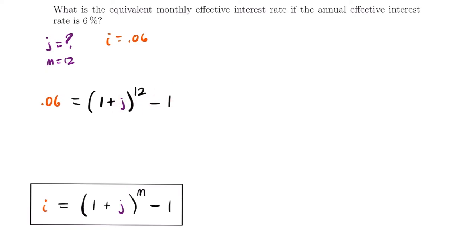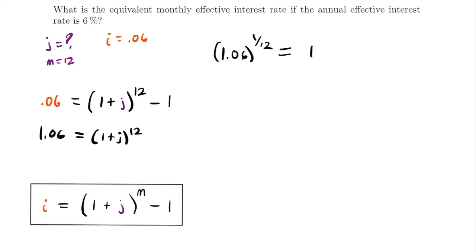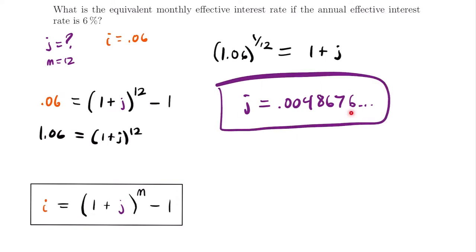Adding 1 to both sides gives 1.06 = (1 + J)^12. Taking the 12th root of both sides — which is the same as raising to the 1/12 power — gives 1.06^(1/12) = 1 + J. Plugging this into our calculator, we find that J = 0.0048676. That is the monthly effective interest rate when the annual effective interest rate is 6%.